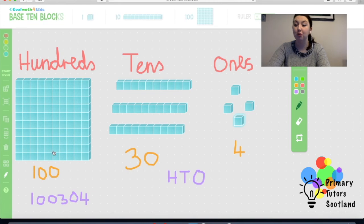So how many hundreds do I have? I only have 100. There's only one block of 100 there. So it's a 1. How many tens do I have? 1, 2, 3. And how many ones do I have? 1, 2, 3, 4. So the answer is 134.